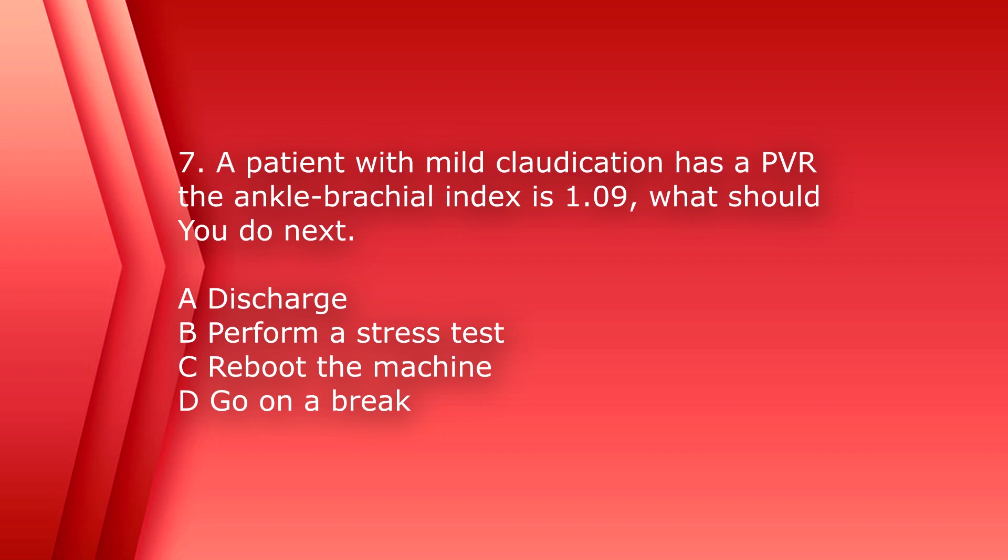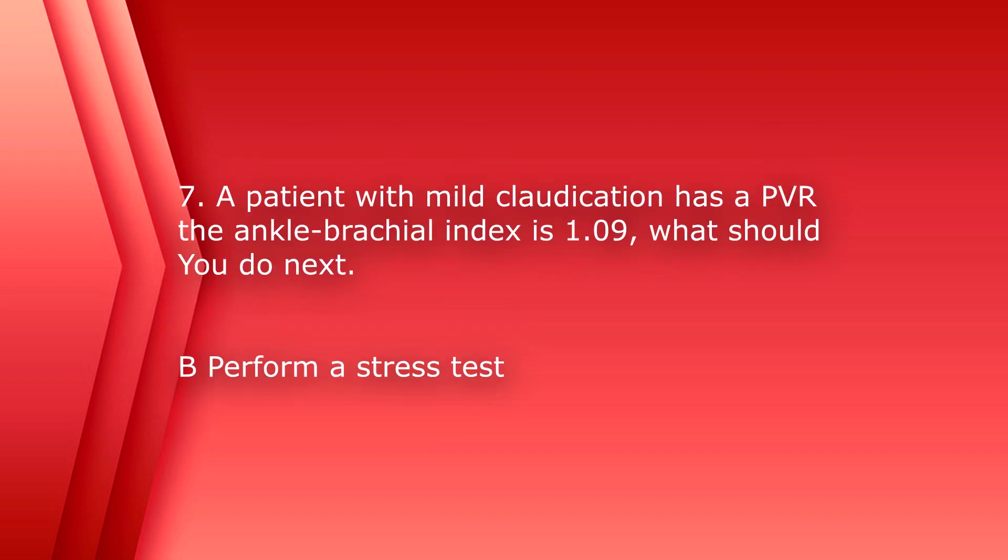A patient with mild claudication has a PVR. The ankle brachial index is 1.09. What should you do next? A, discharge, B, perform a stress test, C, reboot the machine, or D, go on a break. The answer is B, perform a stress test. Then go on a break.